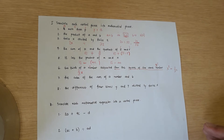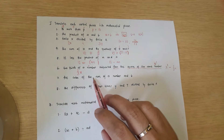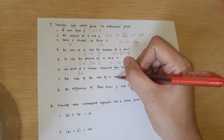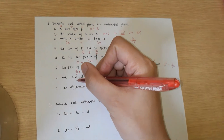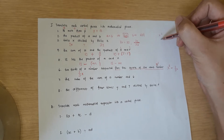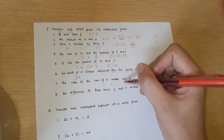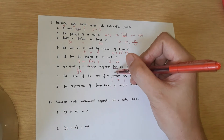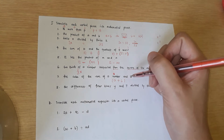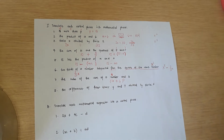Next: the cube of the sum of a number and six. When you see 'the sum of,' 'the product of,' or 'the quotient of,' put that inside parentheses. Let the unknown number be A. The sum of A and 6 is (A + 6). The cube means raised to the power of 3, so the answer is (A + 6)³.